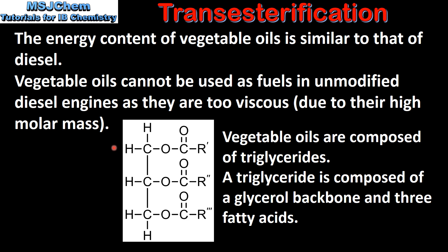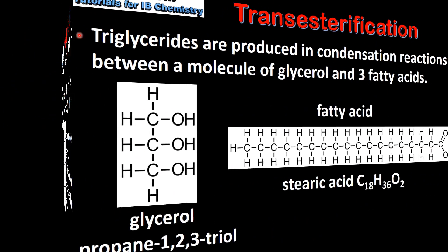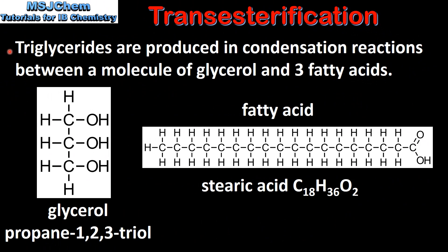Vegetable oils are composed of triglycerides. A triglyceride is composed of a glycerol backbone, which we can see here, and three fatty acids. Triglycerides are produced in condensation reactions between a molecule of glycerol and three fatty acids. Here on the left we have a molecule of glycerol which has the IUPAC name propane-1,2,3-triol. On the right we have a fatty acid molecule which has a long hydrocarbon chain with a carboxyl group on one end.